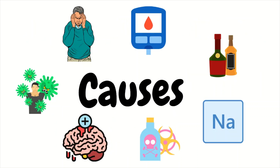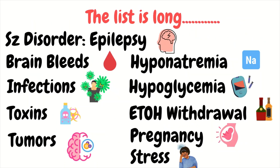Now let's get into the causes of seizures. The list of possible causes is very long, so here I will focus on some of the big ones that you as a new ER nurse should be aware of. The first cause of a patient having a seizure is going to be an underlying seizure disorder like epilepsy. For example, if they are supposed to be on Keppra but haven't taken it recently, or recently had a change in dosing or medication, that change can be the cause of why the patient who has an underlying disorder is having seizures again.